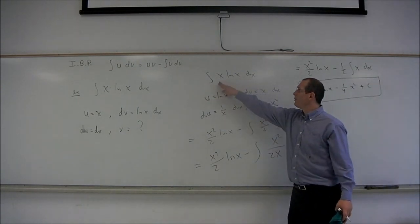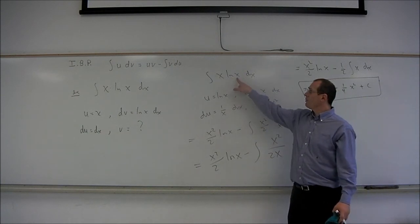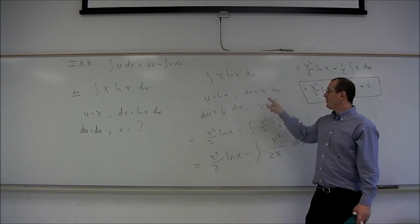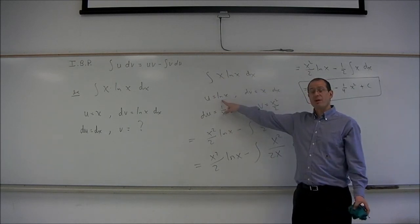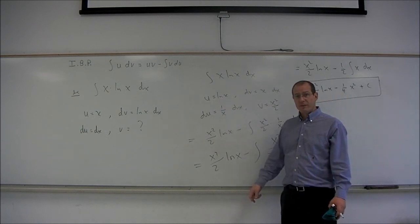So in this second example, the setup was a little bit different. We chose u to be the logarithm and dv to be x to the first power. And that's because we can take the derivative of the logarithm, but not the anti-derivative of the logarithm.